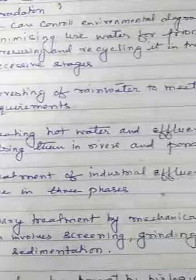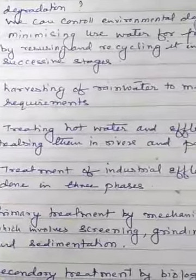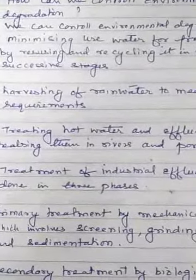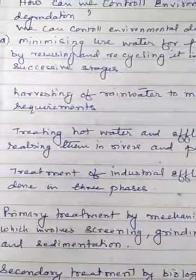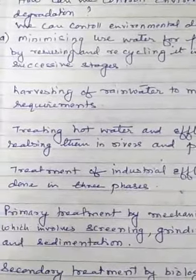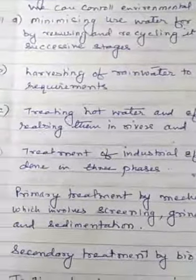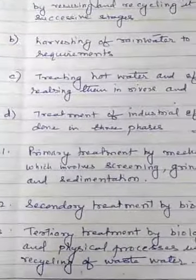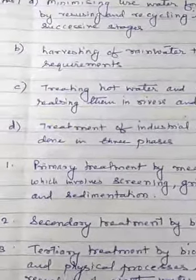Next, treating hot water and effluents before releasing them into rivers and ponds. This is done by treating hot water and other effluents in the STP — sewage treatment plant — where solid materials are separated, hot water is cooled down, and then it is allowed to drain into rivers, lakes, or ponds.